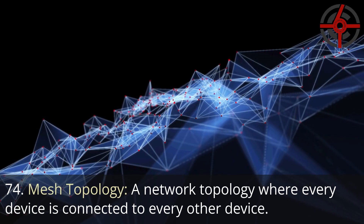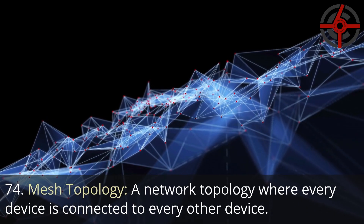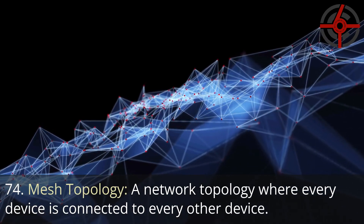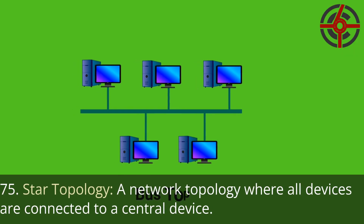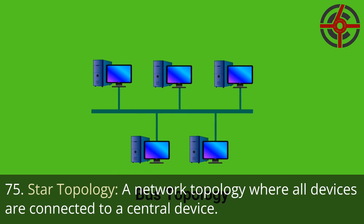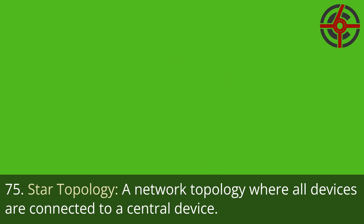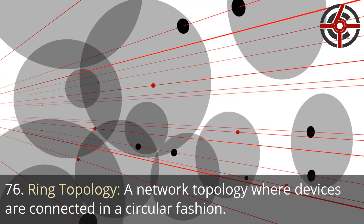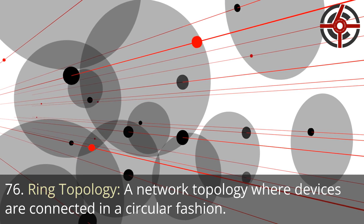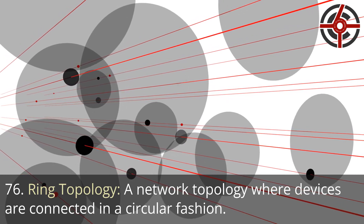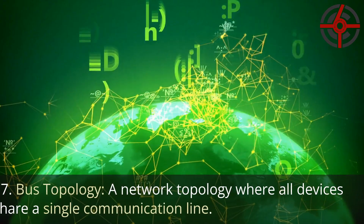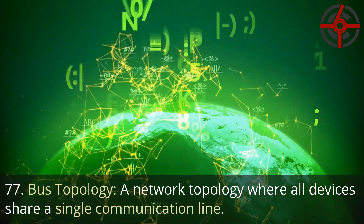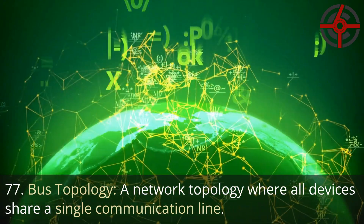Mesh topology: a network topology where every device is connected to every other device. Star topology: a network topology where all devices are connected to a central device. Ring topology: a network topology where devices are connected in a circular fashion. Bus topology: a network topology where all devices share a single communication line.